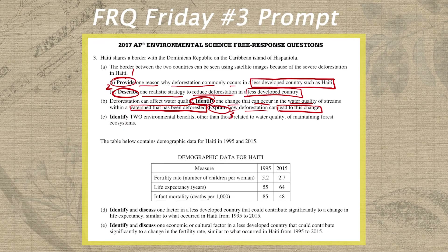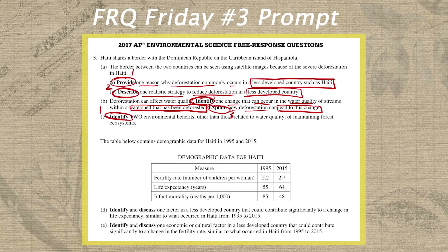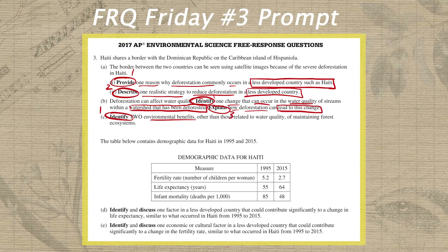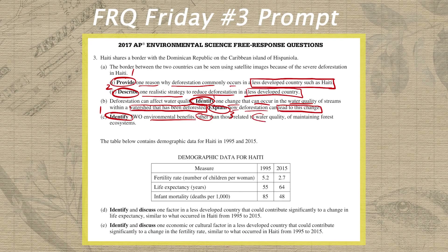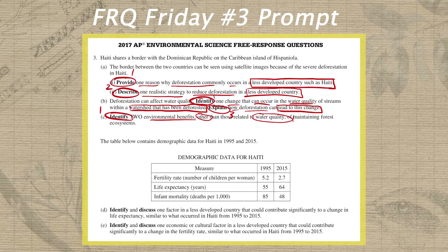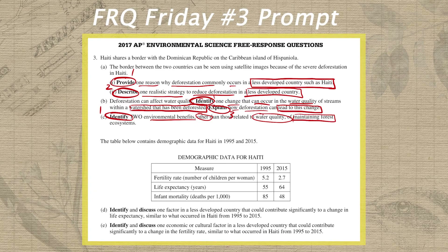In part C, we have an identify prompt, so I circle that and write a one above it. What we need to identify are two environmental benefits of maintaining a forest, other than those related to water quality. I write 'other than water quality' and circle those so we remember those are restrictors, while 'environmental benefits of maintaining a forest' is our modifier.